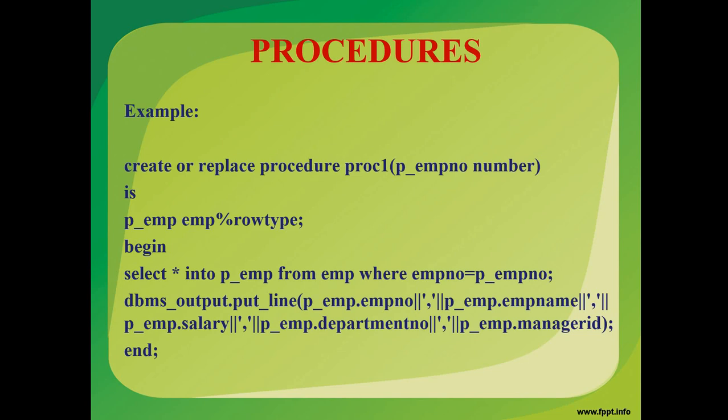And once we are storing into P_EMP, we are going to print by using the keyword DBMS_OUTPUT.PUT_LINE. And while we are printing, we have to give that particular column name including that variable. So here is an example, P_EMP.EMPNO, and then I am using the concatenation symbol.